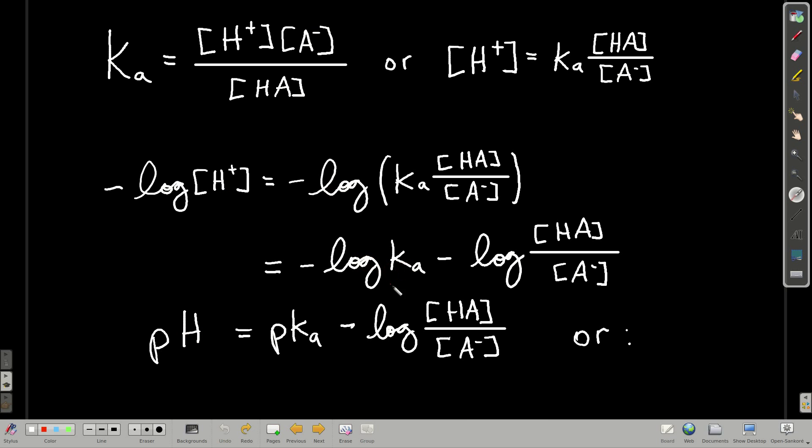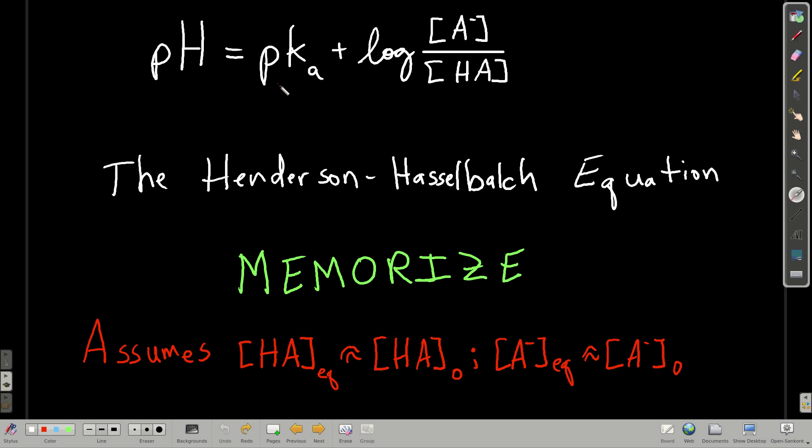Likewise, negative log base 10 of Ka is just pKa. And we get something that looks like this. Or using another property of logs, we get this. This is the form of the Henderson-Hasselbalch equation that you should memorize because it's really quite useful for buffer solutions.